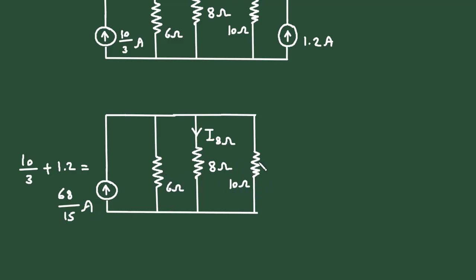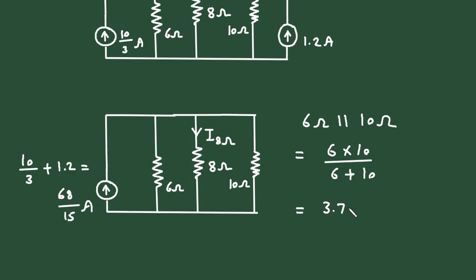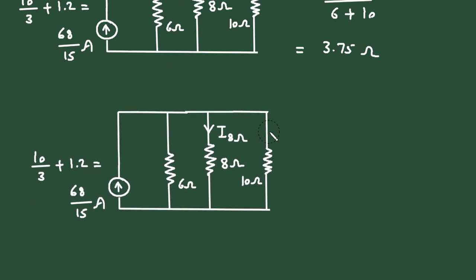Also, this 6 ohm and 10 ohm are connected in parallel. So 6 ohm parallel with 10 ohm equals 6 times 10 divided by 6 plus 10, which gives 3.75 — not ampere, this will be 3.75 ohm because it is resistance. So again we will make a simple single resistor of 3.75 ohm.